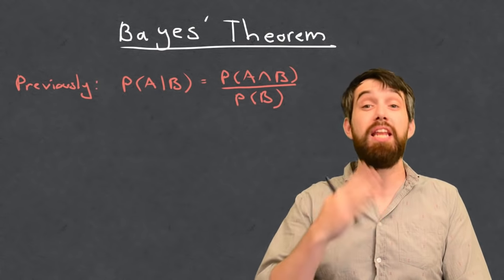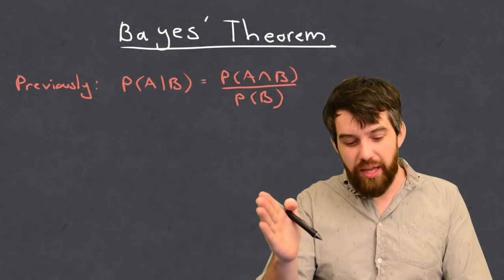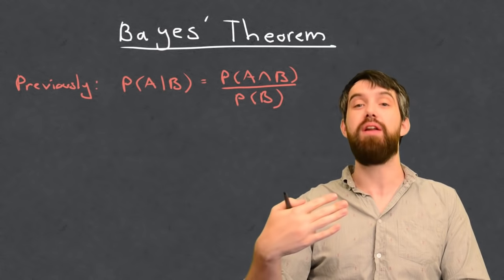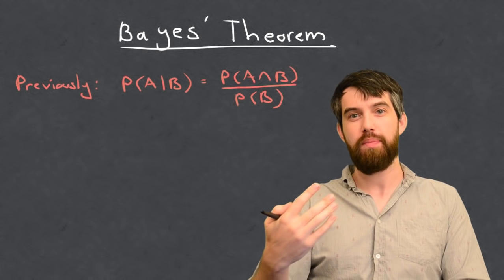That is, we've seen that the probability of A given B was the probability that A and B occurred, the intersection, divided out by the probability of B.